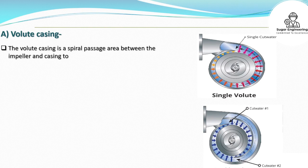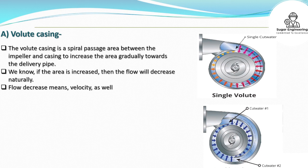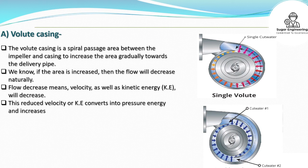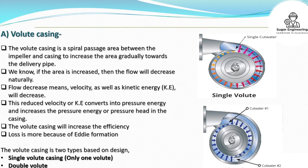A. Volute casing: The volute casing is a spiral passage with an area between the impeller and casing that increases gradually towards the delivery pipe. As the area increases, the flow decreases naturally. This means velocity and kinetic energy decrease, and this reduced kinetic energy converts into pressure energy, increasing the pressure head in the casing. The volute casing increases efficiency, though loss is more due to eddy formation.